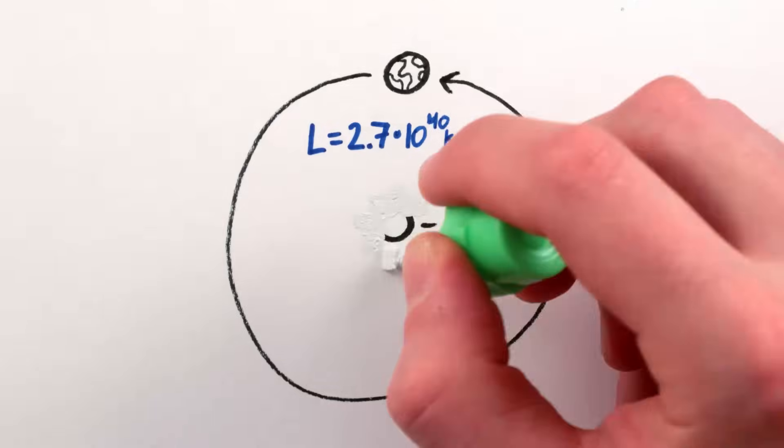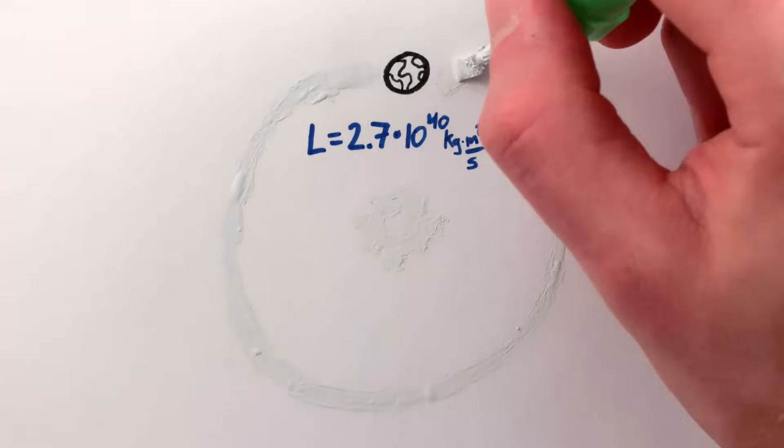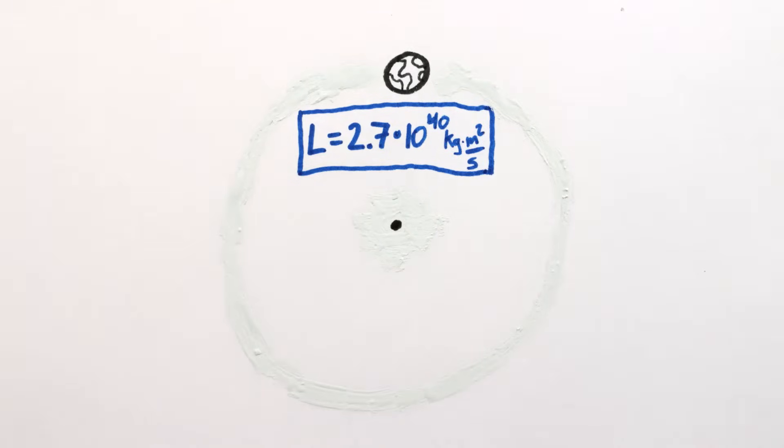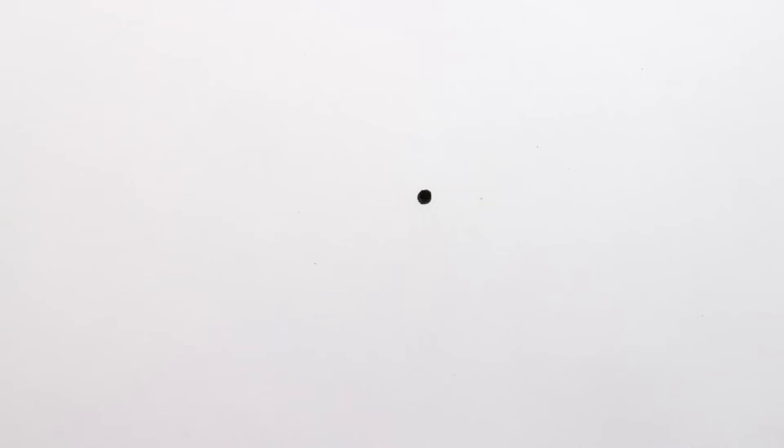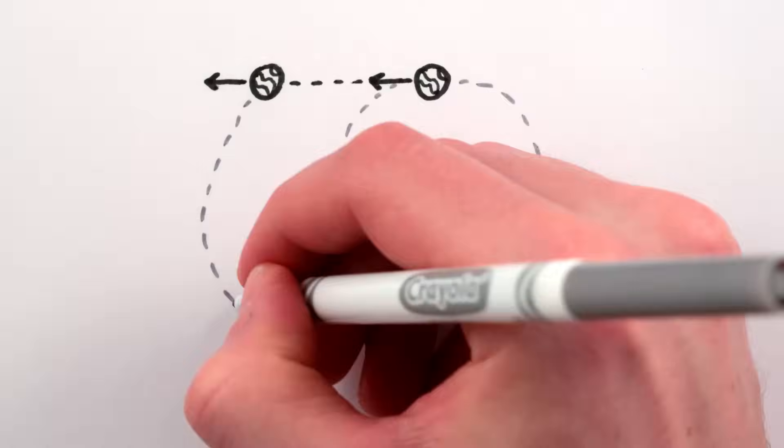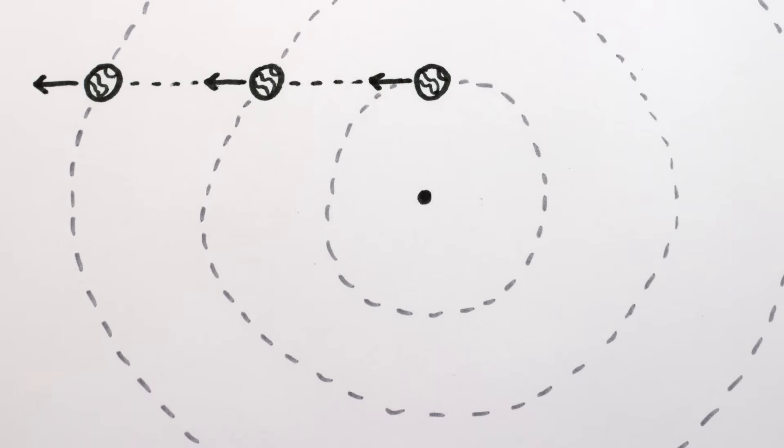But what's amazing is that even if the sun and the rest of the solar system were to suddenly disappear, the Earth would still have that same angular momentum about the point where the sun was. Without the sun's gravity, the Earth would of course now move in a straight line, requiring an ever larger imaginary circle as it got farther from the point where the sun used to be.